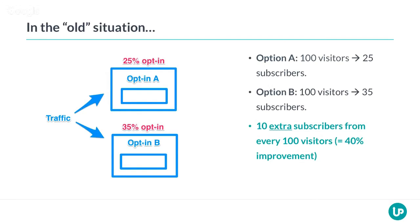In the previous example — without split testing — the leads went down each cycle. This is a huge, huge difference. Those 100 visitors after four cycles resulted in 252 leads and counting. Obviously this is a simplified format, but what's important is the percentage improvement is actually infinite in this scenario.